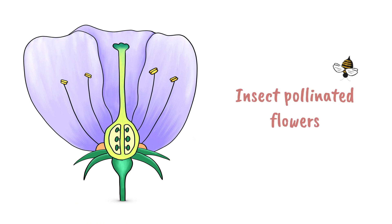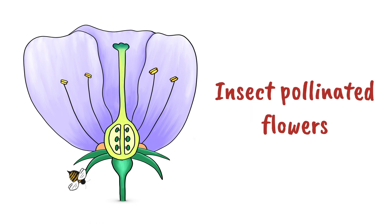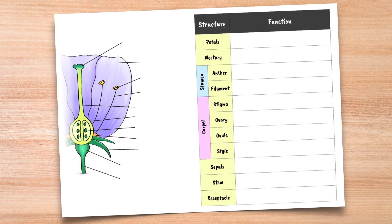This video covers the structures found in insect pollinated flowers and the functions of each of those structures. There's a lot of vocabulary to take in and you might find it useful to fill in this notes sheet as you go along. The link to the sheet is in the description.